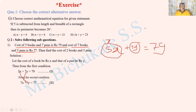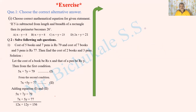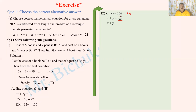Therefore, adding equations 1 and 2: 5x plus 7y equals 79, plus 7x plus 5y equals 77. Adding gives 12x plus 12y equals 156. Taking 12 as common: x plus y equals 156 divided by 12, therefore x plus y equals 13. This is equation number 3.